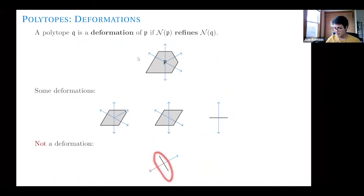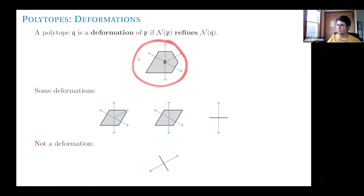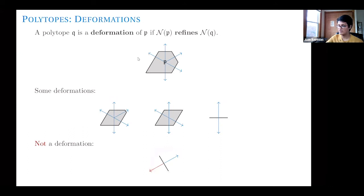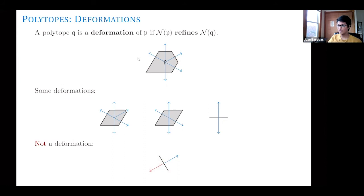Here's an example of something that is not a deformation. If I have this segment, its normal fan has a minimal cone — a line — that is not the union of cones in the normal fan of P, because there is no ray available to take the union with to produce this line. So this fails the property: the normal fan here is not refined by the normal fan of P. This segment, which is basically a face of P, is not a deformation of P. In general, faces of a polytope are not necessarily deformations of it.